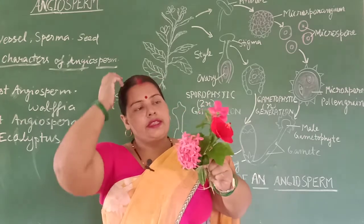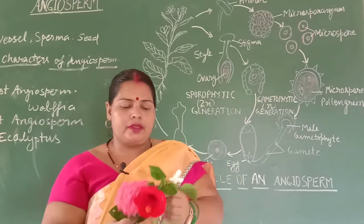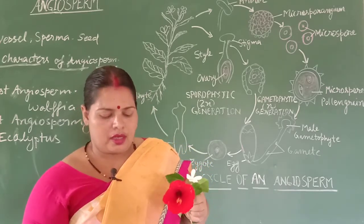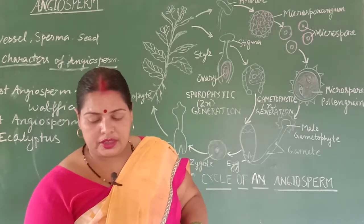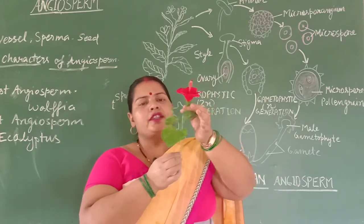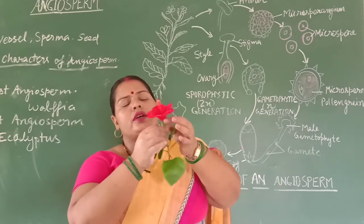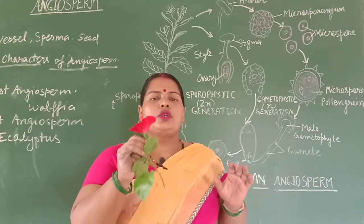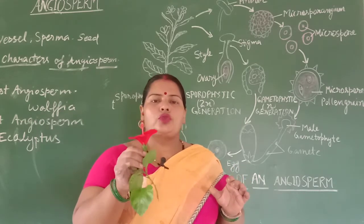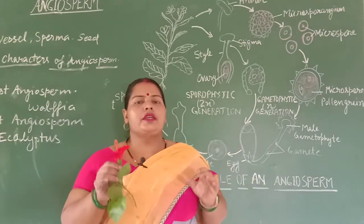These flowers have two sex organs — the male sex organ and the female sex organ. You will learn about the structure of the flower. You can see the stem, leaves, buds, and the flower. This flower belongs to the group Malvaceae. You can see the Chinese rose, whose botanical name is Hibiscus rosa-sinensis.